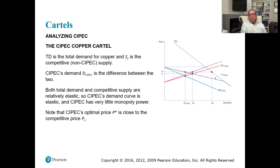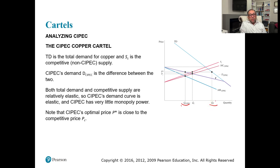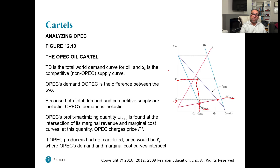On the other hand, looking at the demand curve for copper: TD is the total demand for copper, and SC is the competitive non-CIPEC supply curve. CIPEC's quantity is determined based on marginal revenue and marginal cost. The total demand and competitive supply for copper are relatively elastic — the curves are flatter. So CIPEC's demand is elastic, and CIPEC has very little monopoly power. Because of this, the price P-star is only very slightly higher than the competitive price, unlike oil where the price is quite high compared to the competitive price.